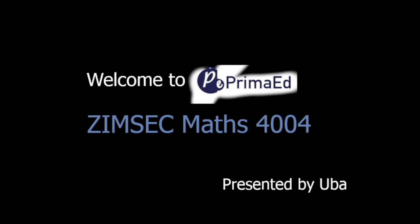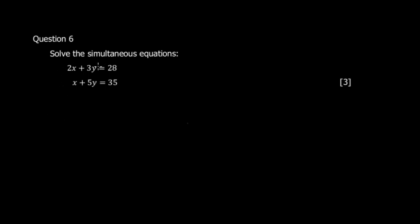Let's do question six — solve the simultaneous equation. If you've been watching these videos, you probably know that I advise you to first try the elimination method, as it is normally the fastest way to compute all the values for a simultaneous equation.